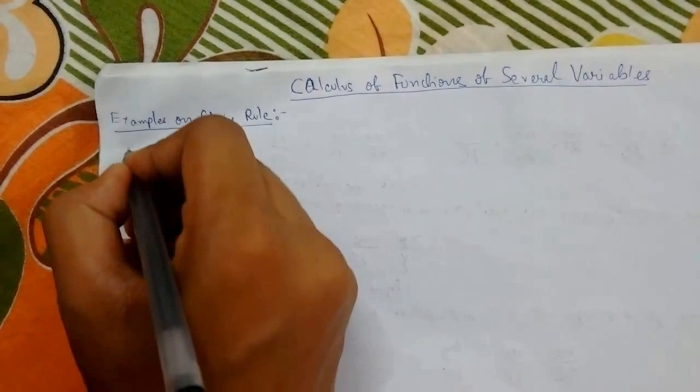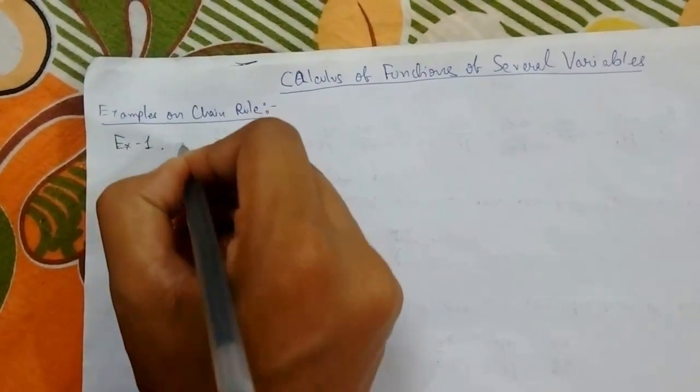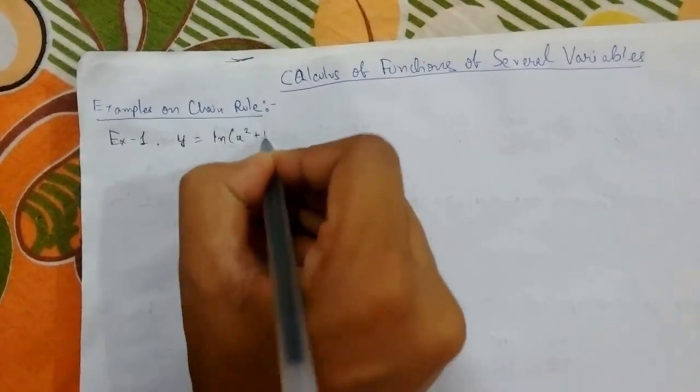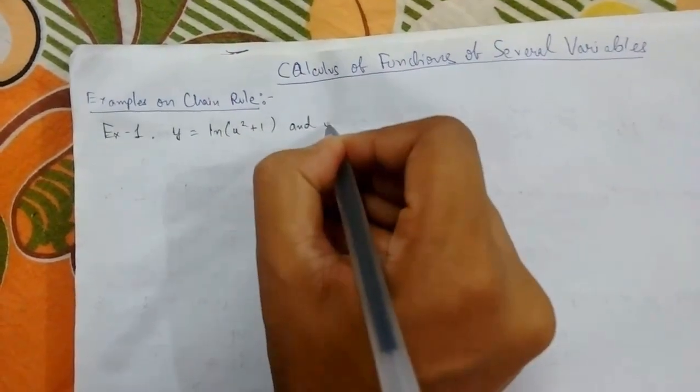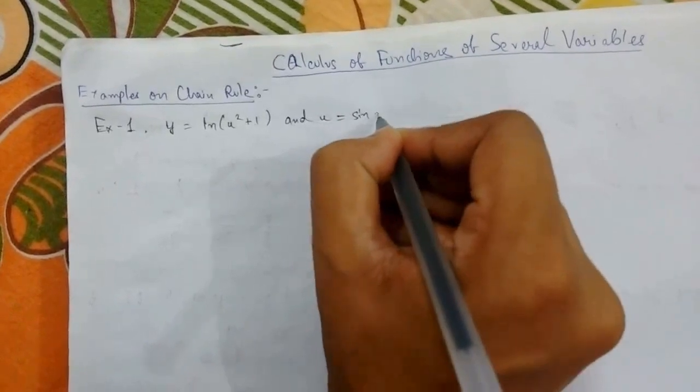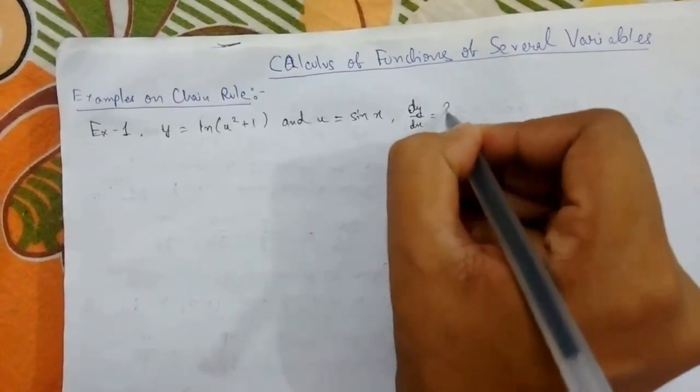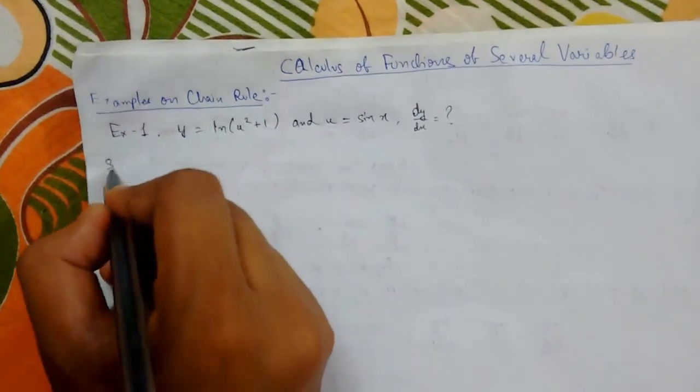Let us see our first example. Suppose we have y = ln(u² + 1) and u = sin(x). We need to find dy/dx. Let's start.